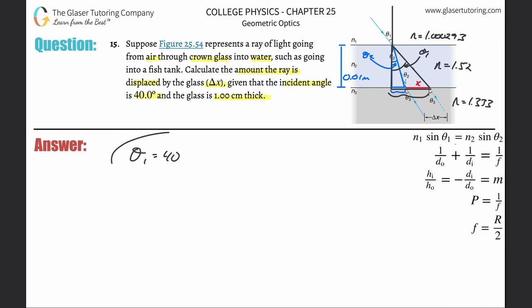First thing is I got to figure out some of these angles. I already know theta one is going to be 40, but how about theta two? We can use Snell's law: it says that the index of refraction of the first medium multiplied by the sine of the incident angle is equal to the index of refraction of the second medium multiplied by the sine of the refracted angle. If I want to solve this for theta two, just divide out the n2, and then take the inverse sine of both sides to get rid of the sine.